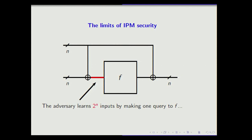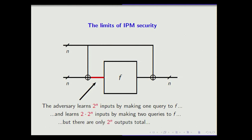With one query the adversary can learn to evaluate 2^n inputs; with two queries, 2 × 2^n inputs. But the total number of outputs is only 2^n. So already with just two queries, the adversary knows more inputs than there are outputs. By the pigeonhole principle, it already has a lot of collisions.